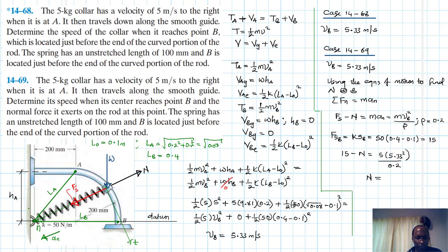Therefore our N, which is the normal force, is just equal to 15 minus 5 by 5.33 squared divided by 0.2, and here we get minus 695.22 Newtons. So the minus just shows that our shown direction was not correct. Therefore this is supposed to be in this direction, and this is just 695.22 Newtons.